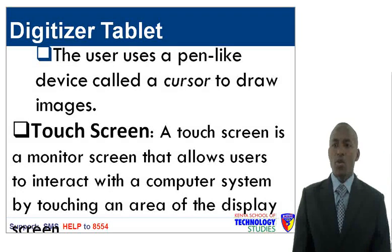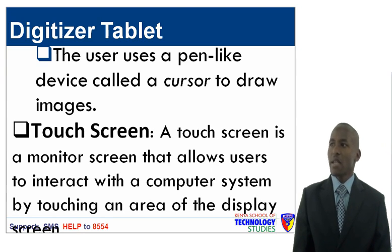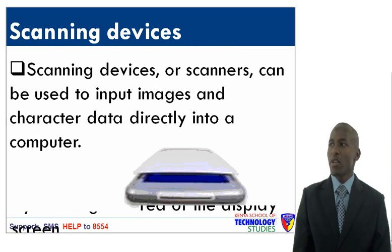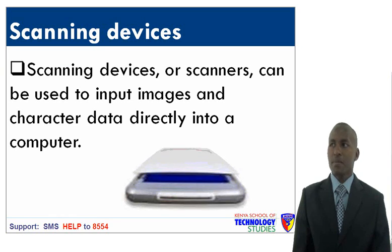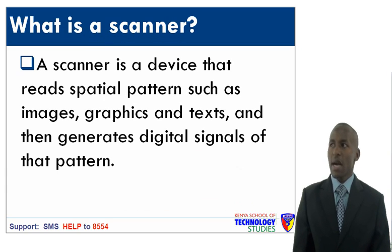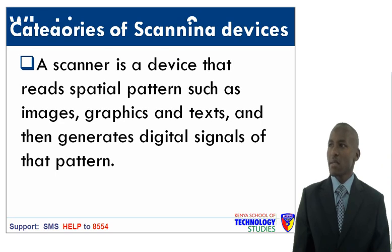The user uses a pen-like device called a cursor to draw images. Another input device is a touch screen — a monitor screen that allows users to interact with a computer system by touching an area of the display. Scanning devices, or scanners, can be used to input images and characters directly into a computer. A scanner is a device that reads spatial patterns such as images, graphics, and text, and generates digital signals of that pattern.